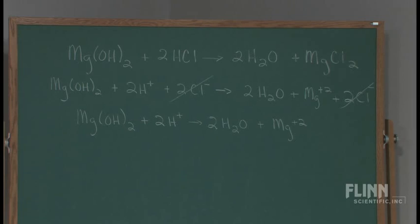Can we look at the board for just a second? Over on the blackboard, I've gone ahead and written the reaction for magnesium hydroxide in hydrochloric acid. We see that this is an acid-base neutralization. The acid and the base combine to make a salt — magnesium chloride — and water. I've shown not only the molecular equation, but the ionic and the net ionic equation.